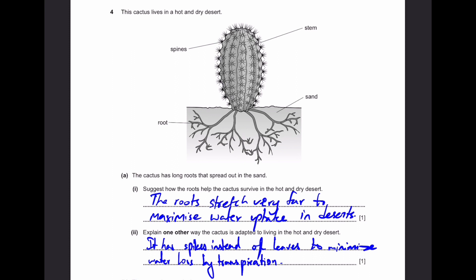Explain one other way the cactus is adapted to living in a hot and dry desert. Of course, it has spikes instead of the leaves to minimize water loss by transpiration. If it had leaves with flat surface, that means water loss would be high because of transpiration. And deserts don't have a lot of water to get back, so it's not good to actually have those leaves. And that's why cactus have spikes and not leaves.